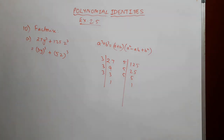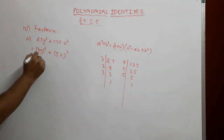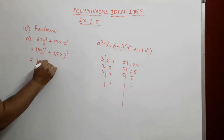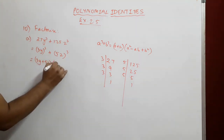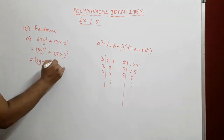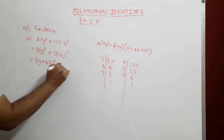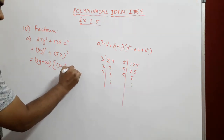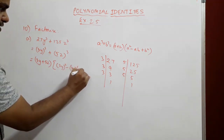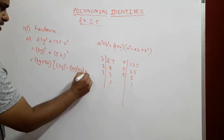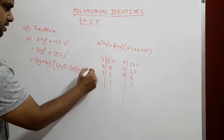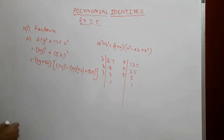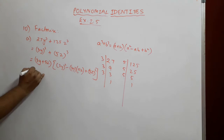Now it is in the a³ + b³ form, and we expand this. We write it as (a + b)(a² - ab + b²), where a = 3y and b = 5z, giving us (3y + 5z)((3y)² - (3y)(5z) + (5z)²).